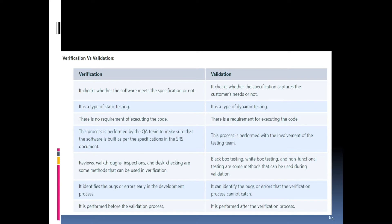In verification there is no requirement of executing the code, whereas in validation you have to execute the code. Verification is performed by the QA team to ensure the software is built as per the SRS document specifications, whereas validation is performed with the involvement of the testing team. Verification methods include reviews, walkthroughs, inspections, and desk checking; validation methods include black-box testing, white-box testing, and non-functional testing. Verification identifies bugs in the development process; validation identifies bugs that verification cannot catch. Verification is performed before validation.